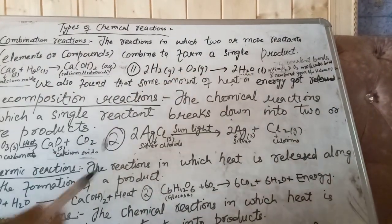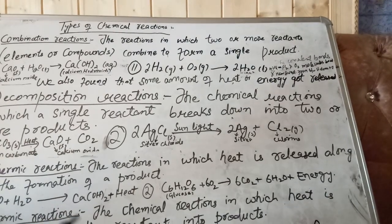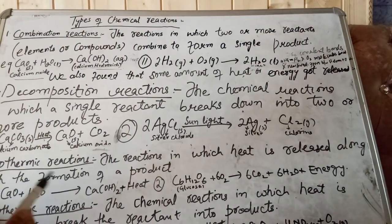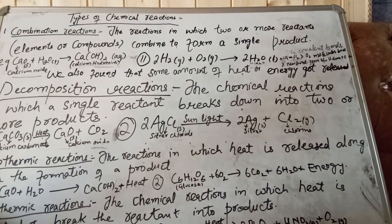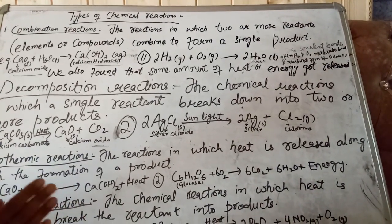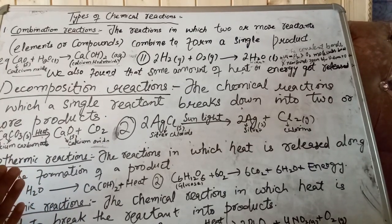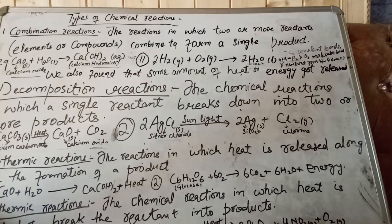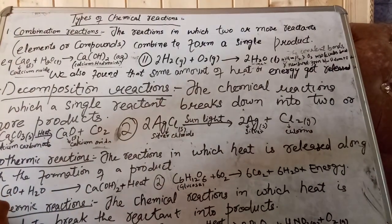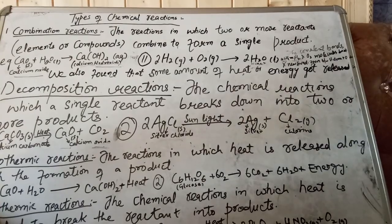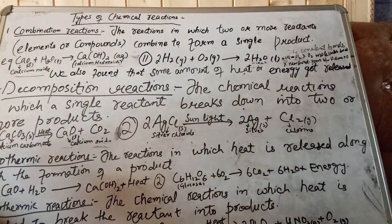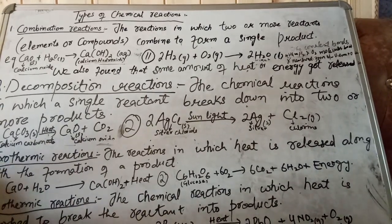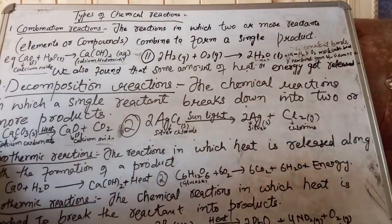When hydrogen gas reacts with oxygen gas, water is formed, which is liquid in nature. The covalent bonds within hydrogen and oxygen molecules break, and new bonds are formed between hydrogen atoms and oxygen atoms. So in all chemical reactions, old bonds are broken and new bonds are formed, by which the law of conservation of mass is followed.